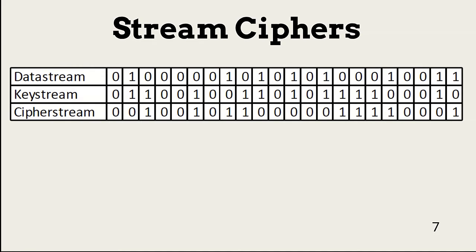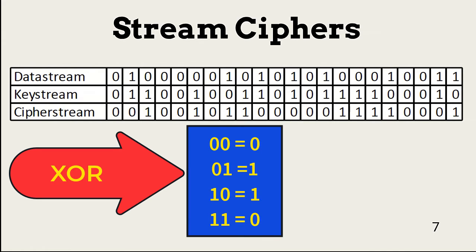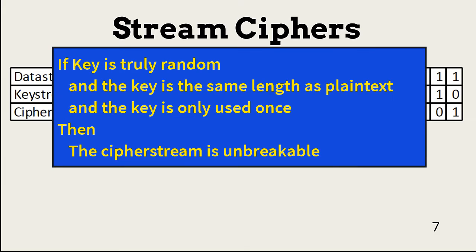A stream cipher is similar to a one-time pad. This is a simple stream cipher example: each bit in the data stream is XORed with each bit in the key stream to create the cipher stream. XOR is a boolean operation in which the output is one if all inputs are not the same. If the key is truly random, and is the same length as the plain text bit stream, and is only used once, the resulting cipher stream is unbreakable.